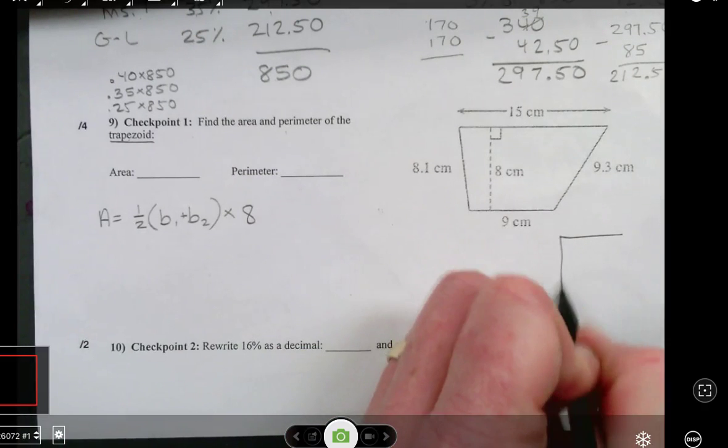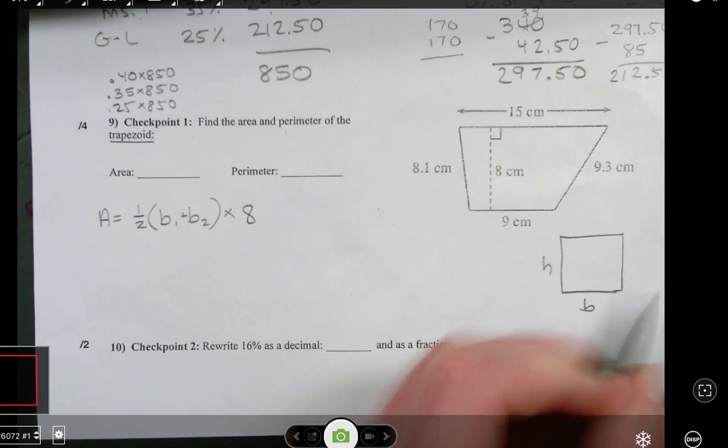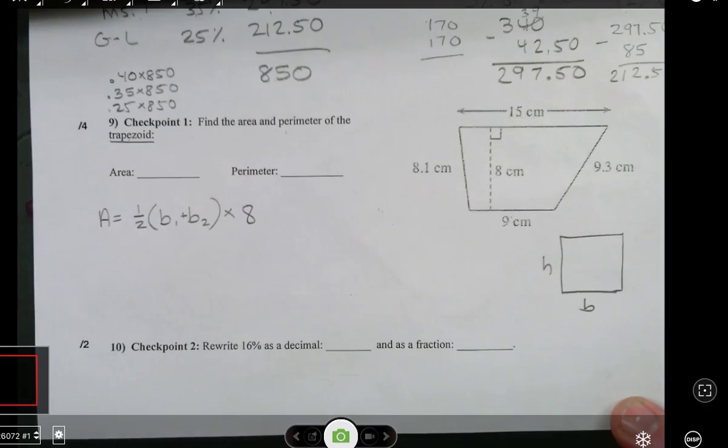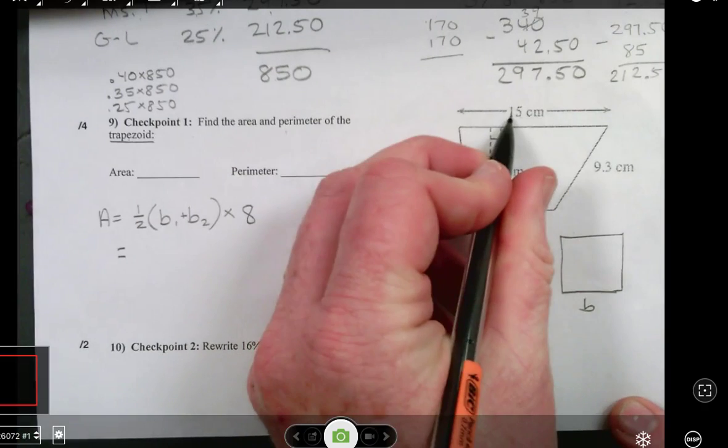Just like with a rectangle, we take the base times the height. Well, a trapezoid has two different bases, so we have to find the average between 9 and 15.